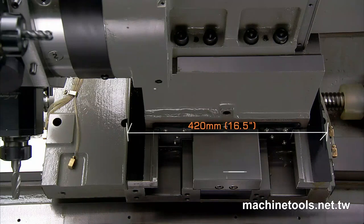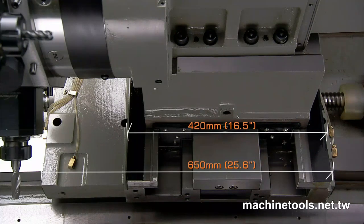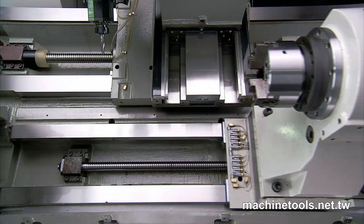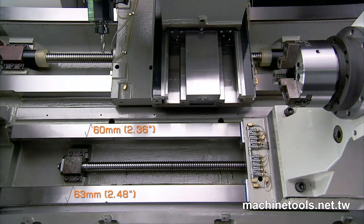Wider and stronger box guideway and hand-scraped wedge structure maintains trapped film of oil between slideway and undercarriage for smooth and even travel.